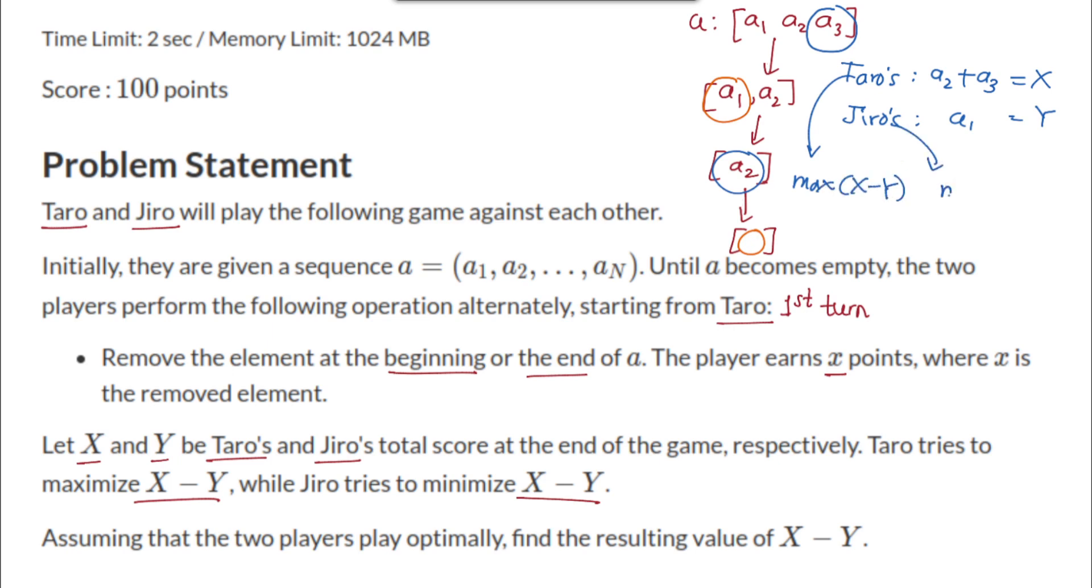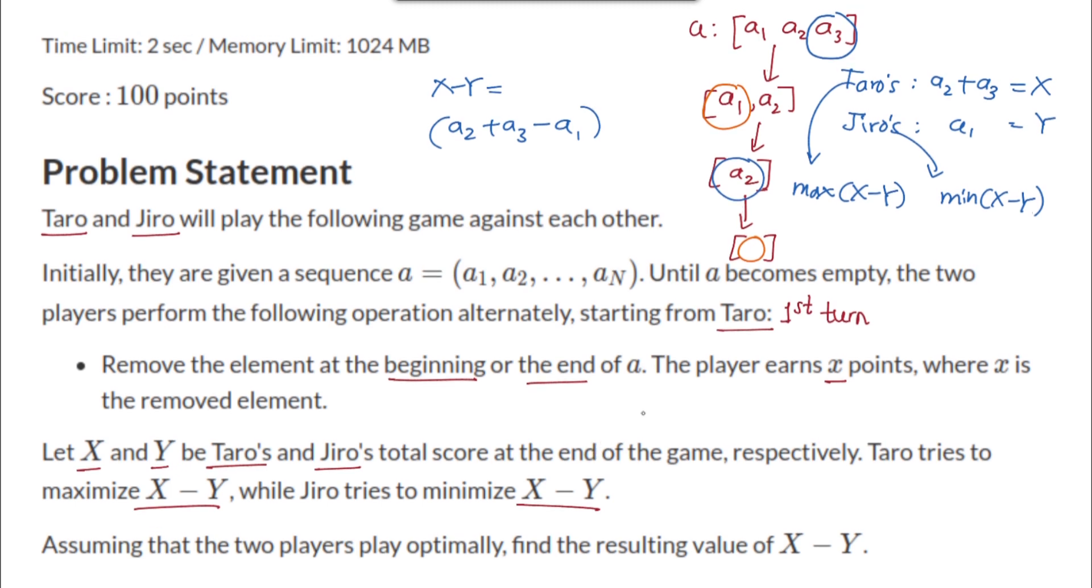Jiro is trying to minimize X minus Y. Let's try to figure out what this X minus Y would be. X minus Y in this case would be the term a2 plus a3 minus a1. So this is what we need to minimize or maximize depending on the player who is currently playing the game.